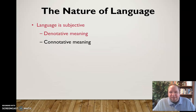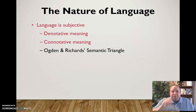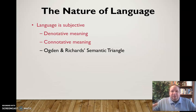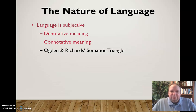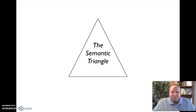This is really well laid out in Ogden and Richards' semantic triangle, which is a conceptual model of the different types of meaning behind words. It's called a triangle because there are three different points — each representing a different aspect of meaning.